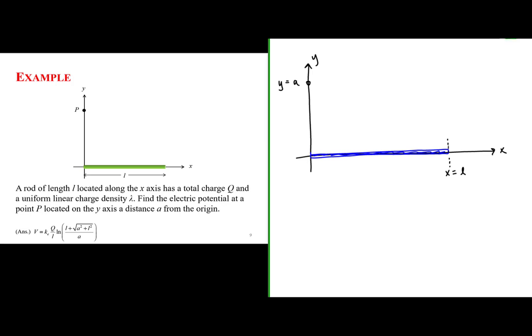This line of charge has a uniform charge density of lambda. Lambda is linear charge density, defined as the charge per unit length. Since it's uniform, the charge per unit length is equal to the total charge divided by the length of that charge.